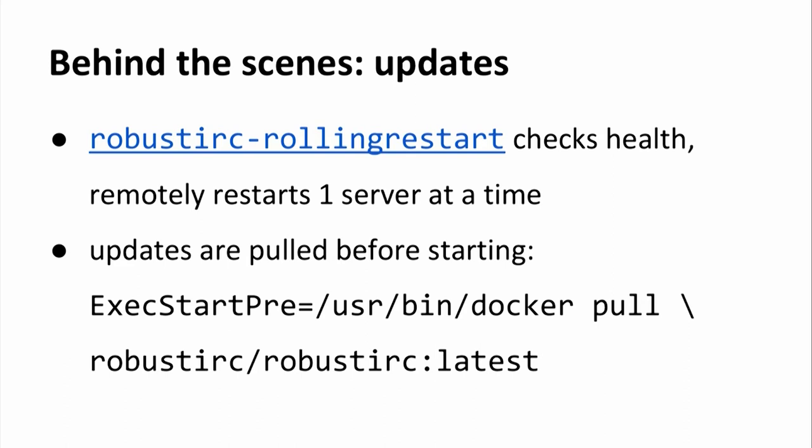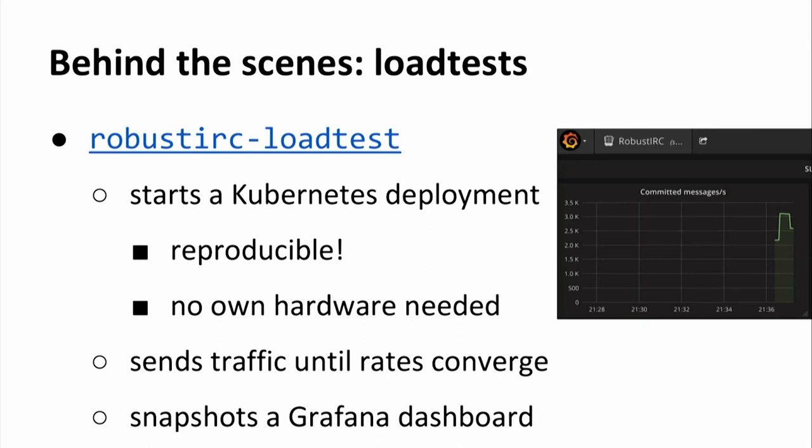Once you have the change done and committed, you push it out to the network using a tool called RobustIRC rolling restart. This tool checks the health of the network at every step and then remotely restarts one server at a time, which the network can handle. Whenever a server is restarted, updates are pulled in using a systemd service file directive that just uses Docker pull. So we distribute our software via Docker, and whenever a server goes down, it checks for an update before coming back up.